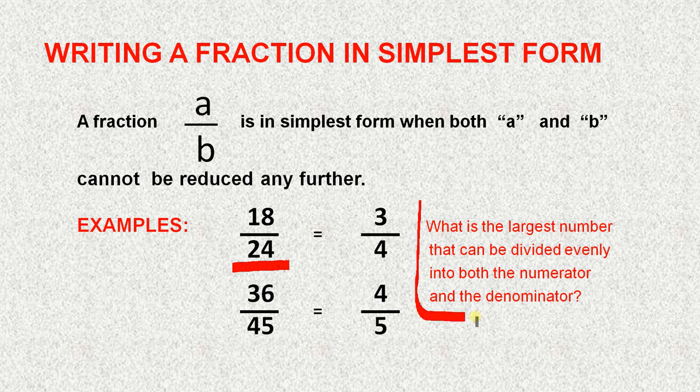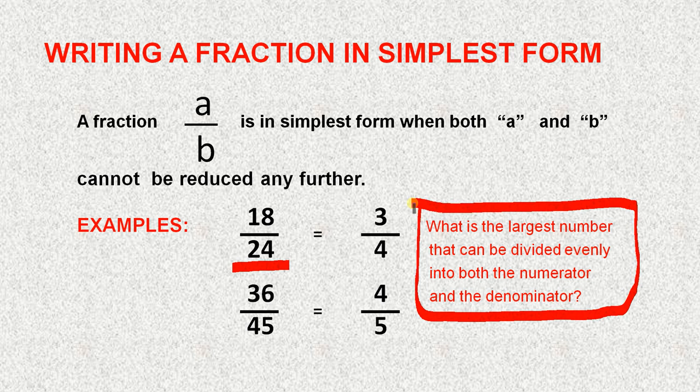Now here is the question we ask each other. It's a very simple question. What is the largest number that can be divided evenly into both the numerator and the denominator? Now we see here, eighteen divided by six gives you three. Twenty-four divided by six gives you four. So this is the simplest form.